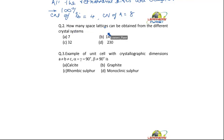How many space lattices can be obtained from the different crystal systems? Do you know this? I had explained to you that there are 7 crystal systems.